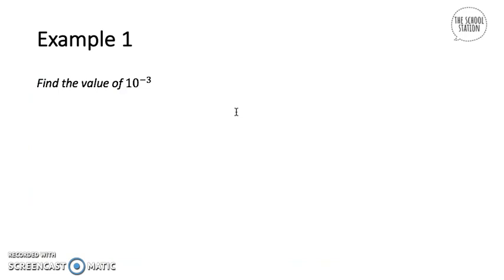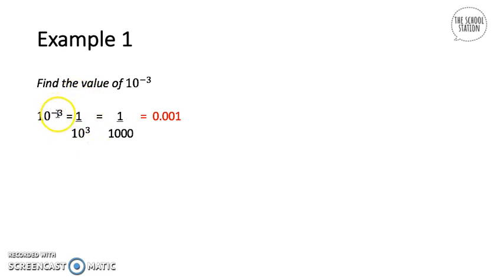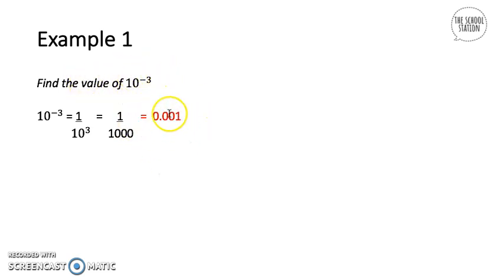The first example is to find the value of 10 to the power of minus 3. Whenever there is a number with a negative power, you turn it into a fraction: 10 to the power of minus 3 means 1 over 10 to the power of 3, because the 1 over cancels the negative sign. 10 to the power of 3 is 1000, so it's 1 over 1000, which as a decimal is 0.001. Either answer is correct.